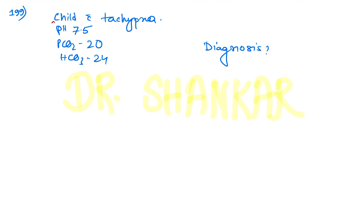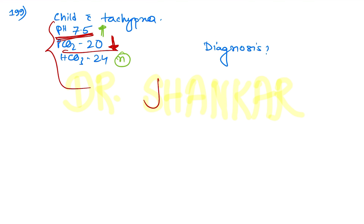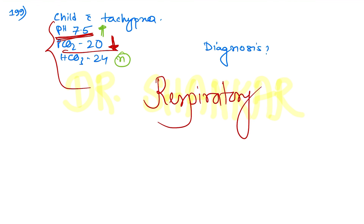Question number 199: a child with tachypnea — ABG interpretation. PCO2 is decreased and pH is increased with normal bicarbonate. This is respiratory alkalosis. The answer is respiratory alkalosis. This was also a long clinical scenario-based question.